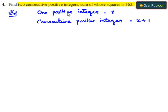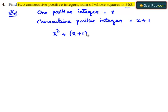According to the given condition, the sum of the squares of the two consecutive positive numbers is 365. So the square of the first positive integer is x squared, and the square of the consecutive positive integer is x plus 1 whole square. This is given as 365.